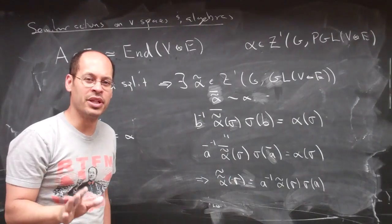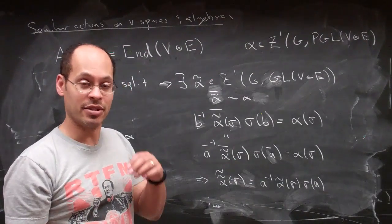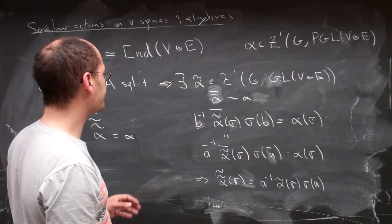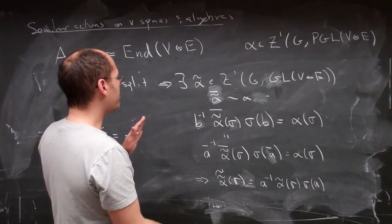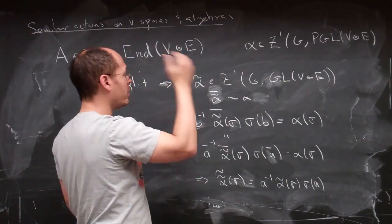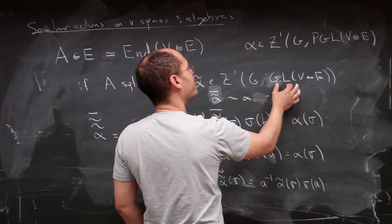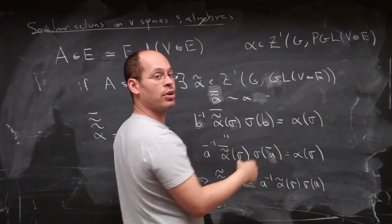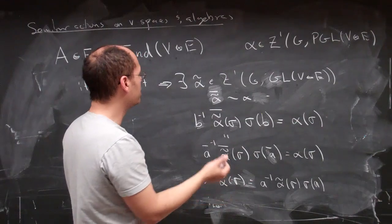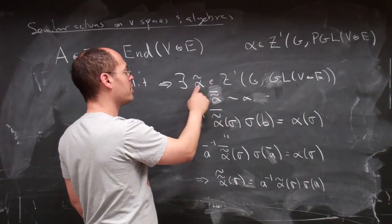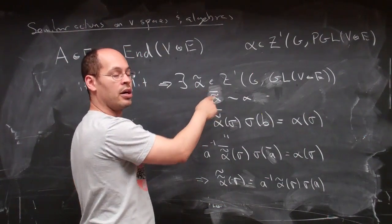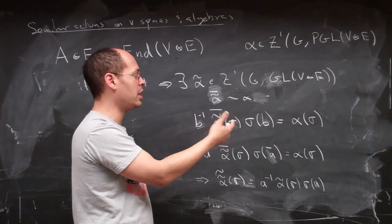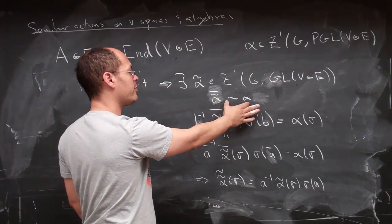And let me just rehash that final point again, just to make sure that it's totally clear. If we suppose that we have some one co-cycle in GL which maps to something co-homologous to our PGL co-cycle, what does that mean? That means we have some alpha tilde or one co-cycle such that if we take its bar, which by which I mean its image in PGL, we get something co-homologous to alpha.